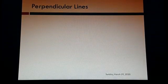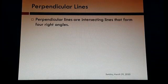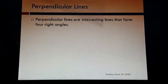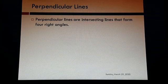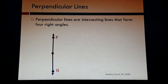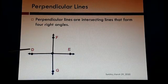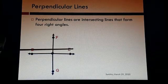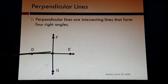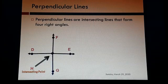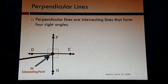Now, perpendicular lines. What are perpendicular lines? Perpendicular lines are intersecting lines that form four right angles when they intersect each other. Right angles are angles that measure 90 degrees and they form square corners. So here FG is intersected by line DE at point H. Do they form square corners? Yes — you can see the first, second, third, and fourth square corners, so four right angles.